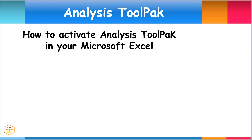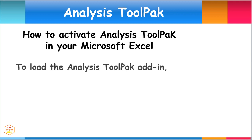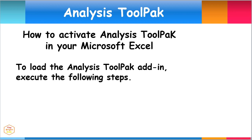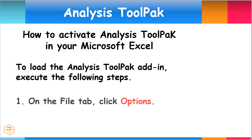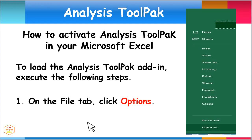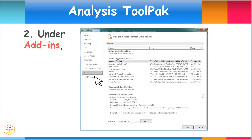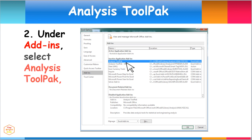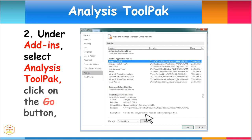To conduct the T-Test, make sure the Analysis Tool Pack is activated in your system. To load the Analysis Tool Pack add-in, execute the following steps. On the File tab, click Options. Under the Add-Ins menu, look below the Inactive Applications add-ins. Select Analysis Tool Pack and click on the Go button.